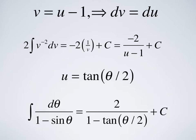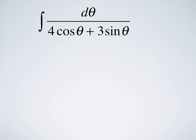The integral of dθ/(1-sinθ) is 2 divided by (1 - tan(θ/2)) plus the constant of integration. Now let's do a more complicated example. This one is going to require not just substitution techniques, but we're also going to have to use partial fractions, which is pretty common with these types of integrals.